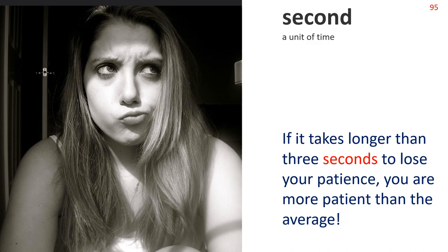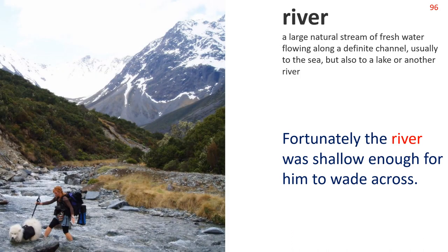River — a large natural stream of fresh water flowing along a definite channel, usually to the sea but also to a lake or another river. Fortunately, the river was shallow enough for him to wade across.